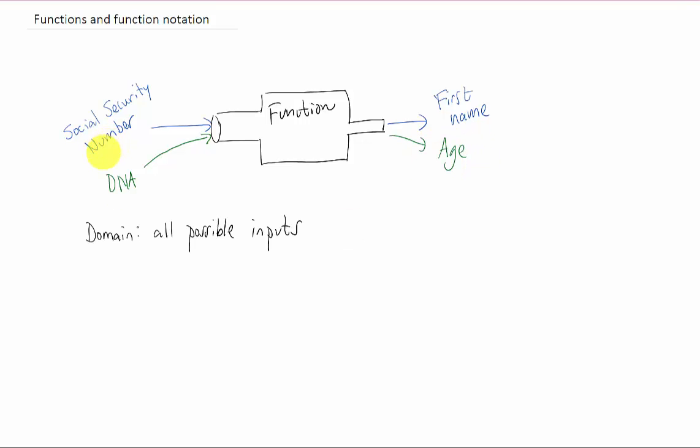All the possible inputs of a particular function is called the domain of that function. In the example where we're inputting social security numbers into the function, the domain of that function would be all possible social security numbers.